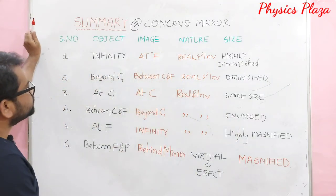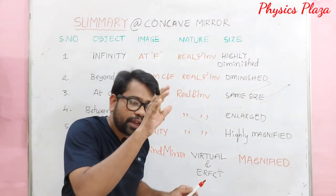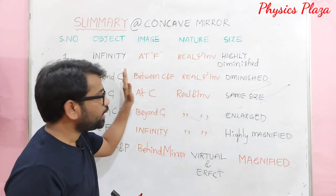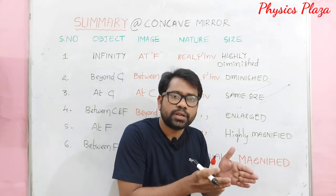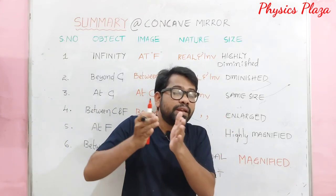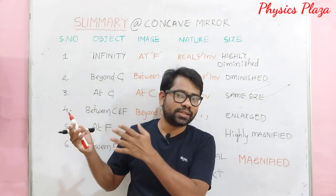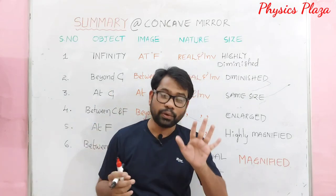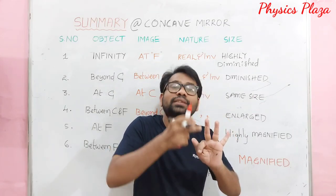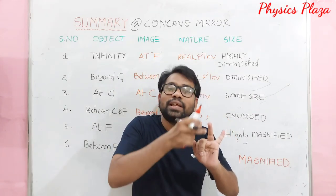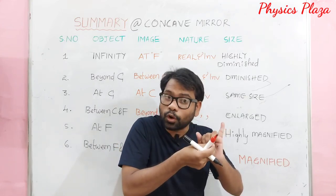Second important observation: as we move the object from infinity towards the mirror, the image moves away from the mirror in the opposite direction. The object displacement is towards the mirror, while the image displacement is away from the mirror — they are opposite in direction.